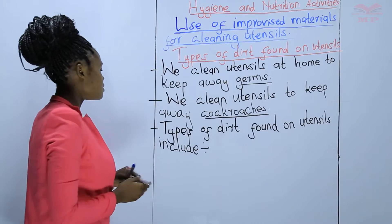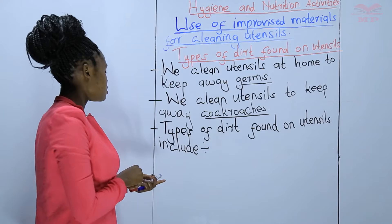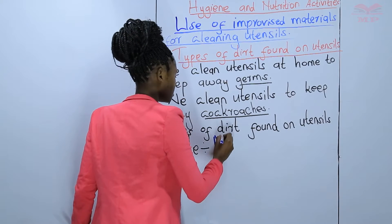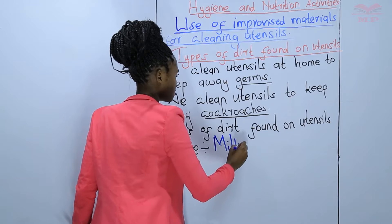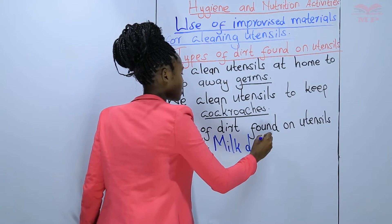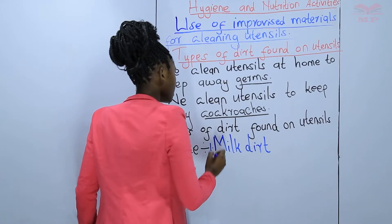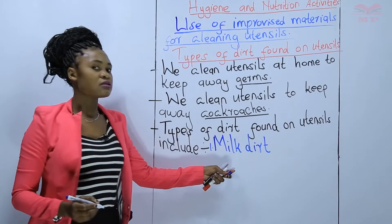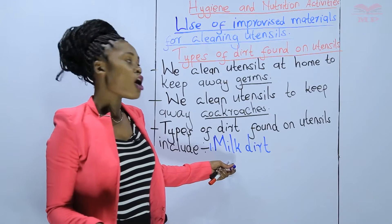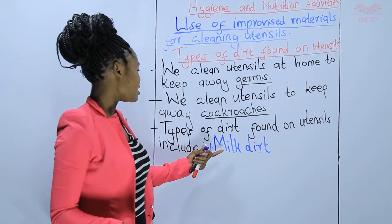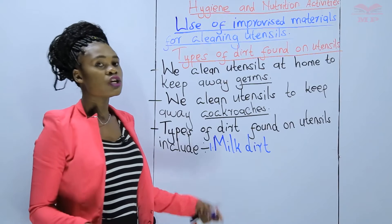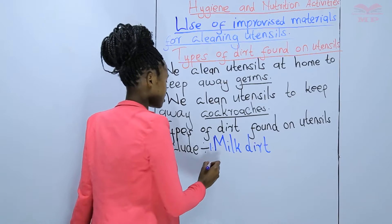The first type of dirt found on utensils is milk dirt. Milk dirt includes the dirt from maybe a cup that you've used to drink your tea or even yogurt. So, milk dirt is a type of dirt found on utensils.